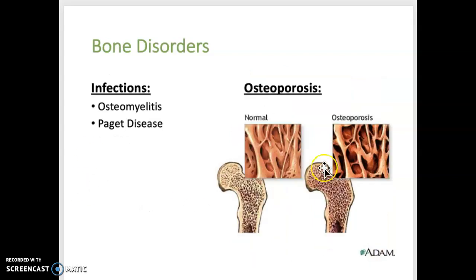Next, some infections. Osteomyelitis is a bacterial infection of bones. Paget disease is chronic inflammation of bones, resulting in thickening and softening.